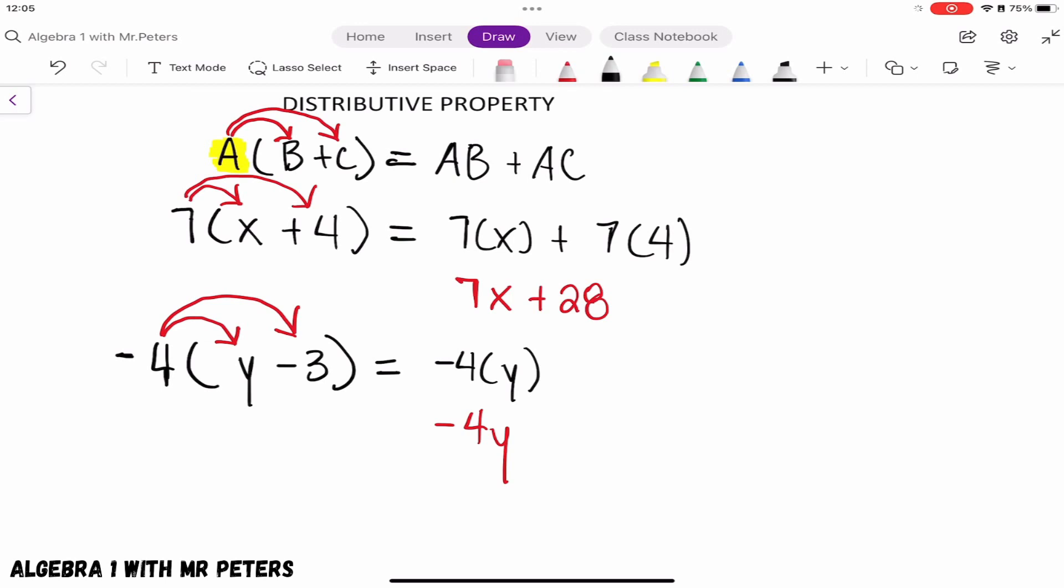Then -4 times -3, which gives us a positive number: plus 12. So when you have negatives in there, don't think that you're actually going to be subtracting - you're just multiplying, and the sign is going to be negative.